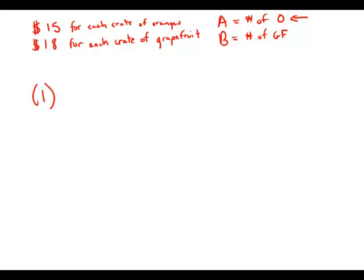So statement number one tells us, last week the number of crates of oranges that the grower shipped was 20 more than twice the number of crates of grapefruit shipped. All right, hold on a second.